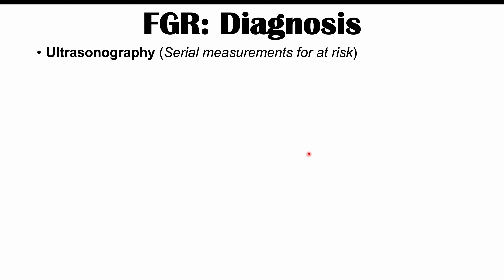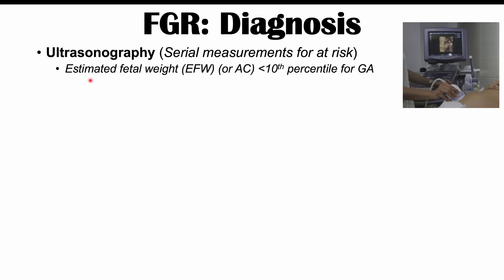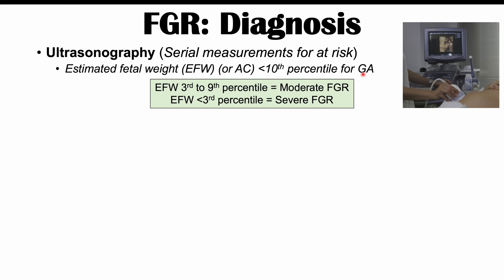Fetal growth restriction is diagnosed using ultrasonography, with serial measurements for at-risk patients typically every three to four weeks. Diagnosis is based on an estimated fetal weight or abdominal circumference less than the 10th percentile for gestational age. This is further classified as moderate FGR (estimated fetal weight between the 3rd and 9th percentile) or severe FGR (estimated fetal weight less than the 3rd percentile).